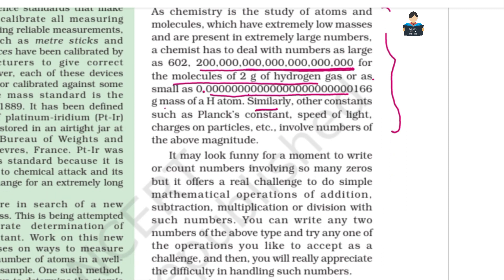Similarly, other constants — such as Planck's constant, speed of light, and charges on particles — also involve very large or very small numbers, which makes them difficult to handle directly.